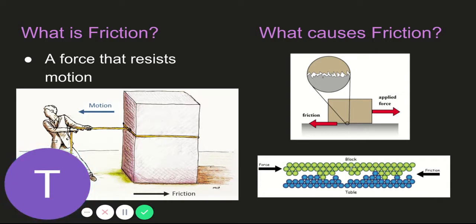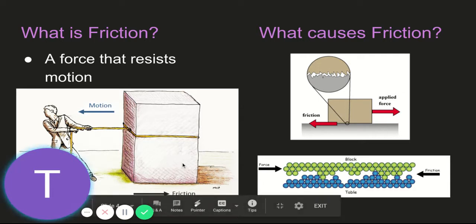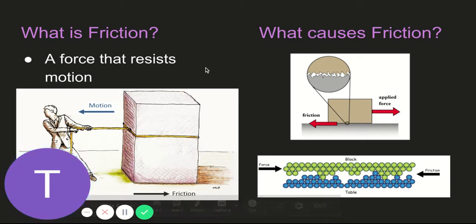Friction is going to resist motion. Or like this picture shows down here, it's acting in the opposite direction of motion. The guy is pulling to the left, and friction is going to act to the right. So it opposes or acts in the opposite direction of motion.